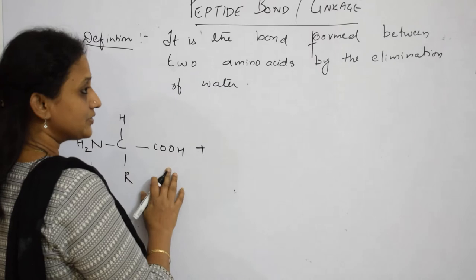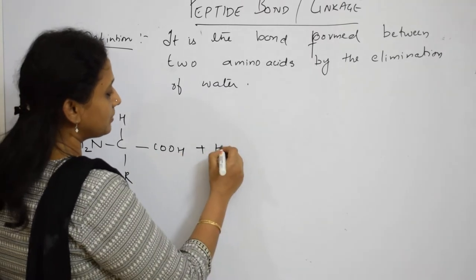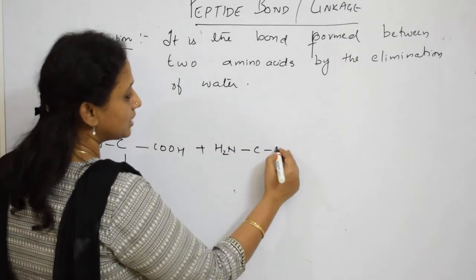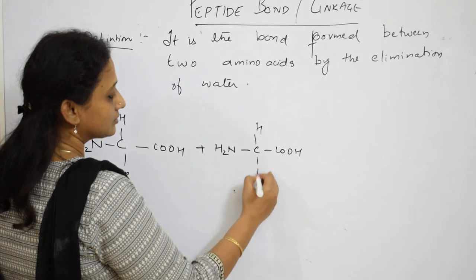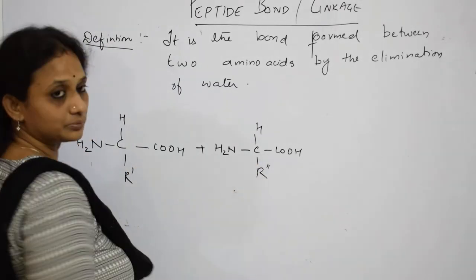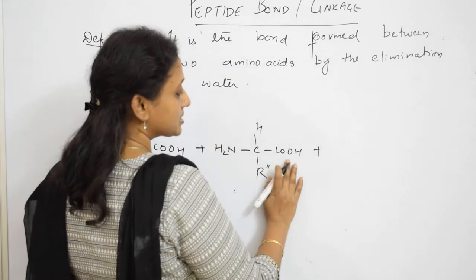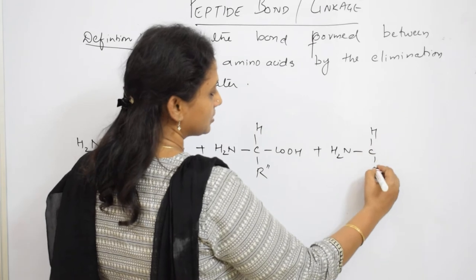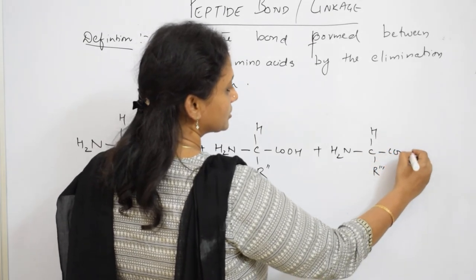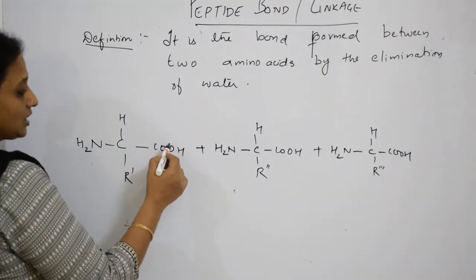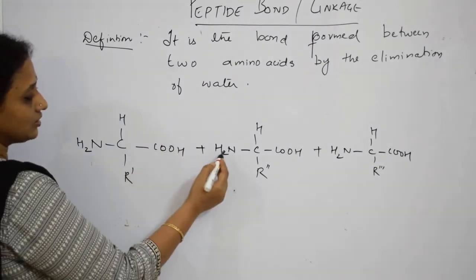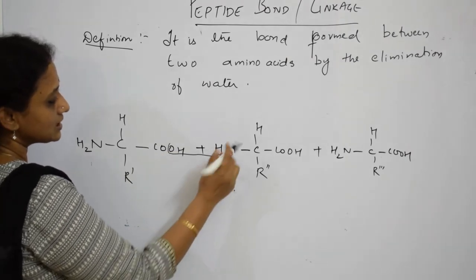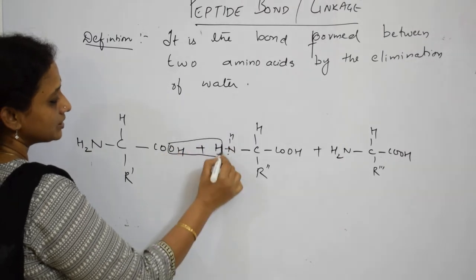How is it going to combine? The carboxylic group faces the amino group. So I have the amino group on one side and the carboxylic group on the other, with H and R. Writing R1, R2, R3 — the carboxylic end meets the amino end. The OH from one side and H from the other are eliminated.